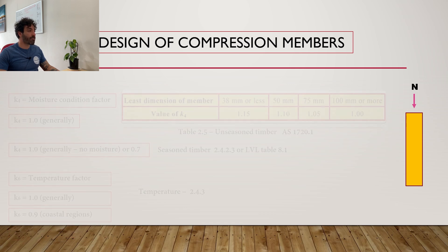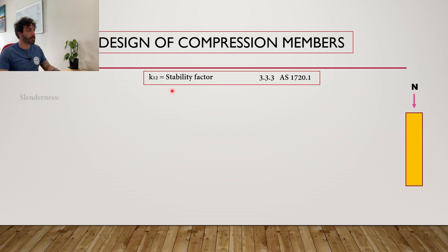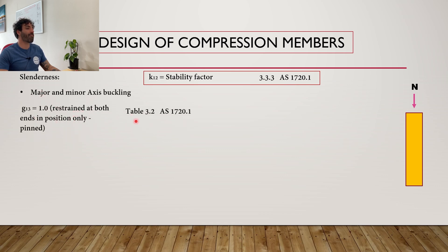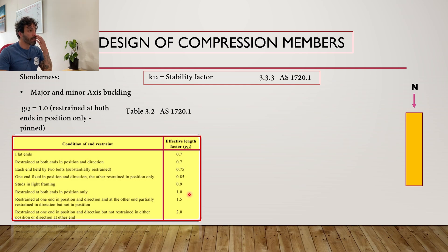The last modification factor is k12, the stability factor. This accounts for the reduction in capacity of slender members due to buckling — different modes of failure that k12 takes into account. To work out k12, we start with g13, the effective length factor. Assuming our column is pin-pin, g13 equals 1 as per Table 3.2, with the condition of restraint being restrained at both ends in position only.